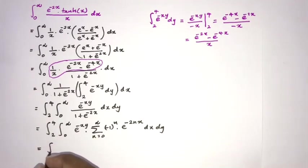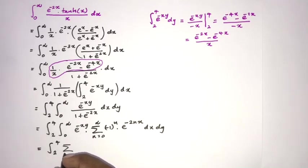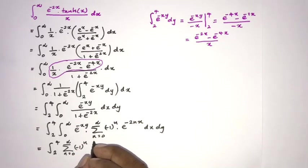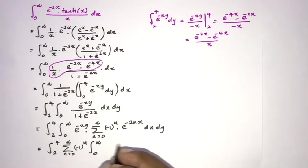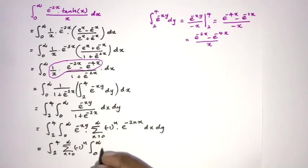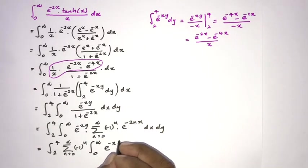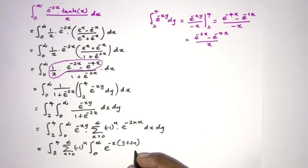We have the integral from 2 to 4, and we switch the integral sign and sigma notation. So we can write the sum from 0 to infinity of (minus 1) to the n, times the integral from 0 to infinity of e to the minus x times (y plus 2n) dx, dy.